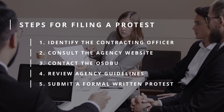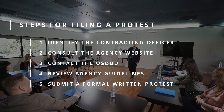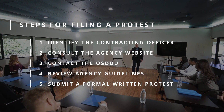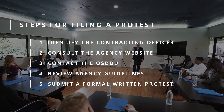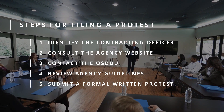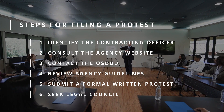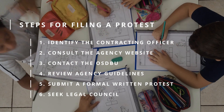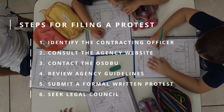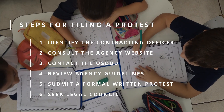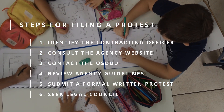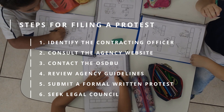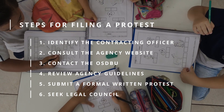Fifth, if discussions with the contracting officer or the OSDBU do not lead to resolution and you decide to proceed with a formal protest, prepare a written protest according to the agency's guidelines and submit it to the designated protest office or official. Sixth, consider consulting with legal counsel experienced in government contracts and procurement law. They can provide expert guidance on the protest process, help prepare a strong protest, and navigate any legal complexities that may arise.